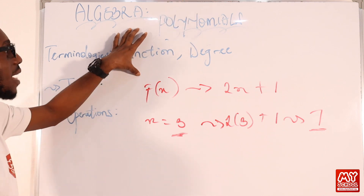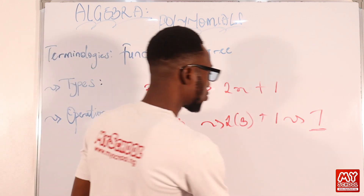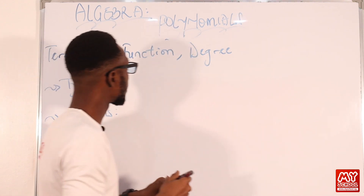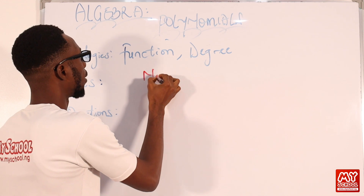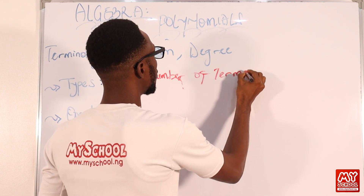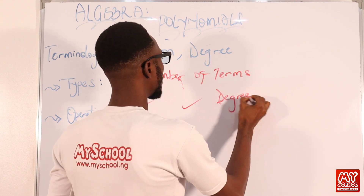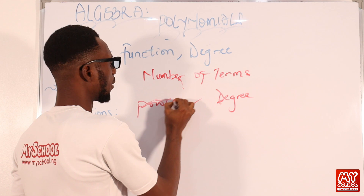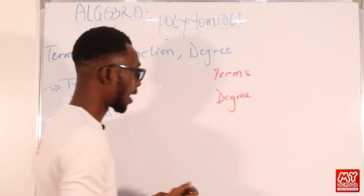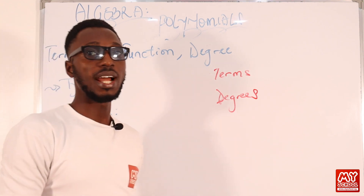Since we mentioned polynomial as a type of function, let's look at the basic types of polynomial. I'm going to classify polynomials based on two things: the number of terms, and the degree — that is, the highest power of the variable present in the expression. So we classify polynomials based on terms present and degrees.